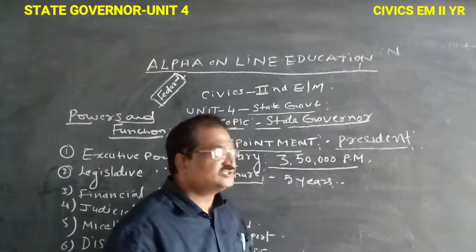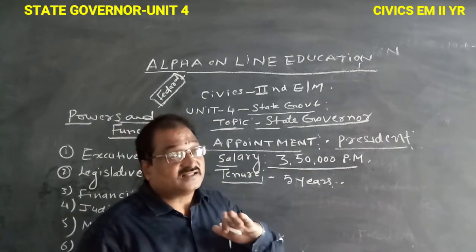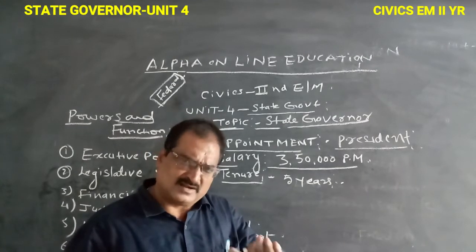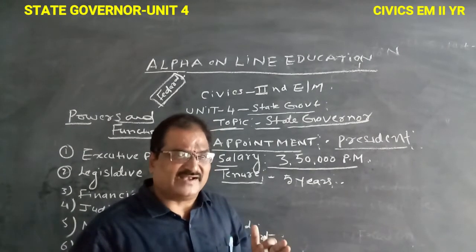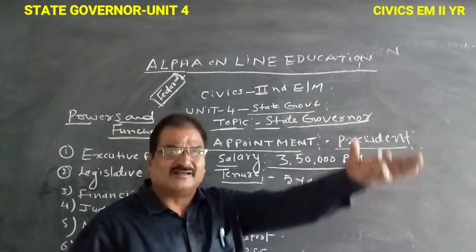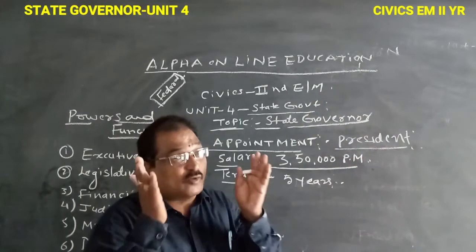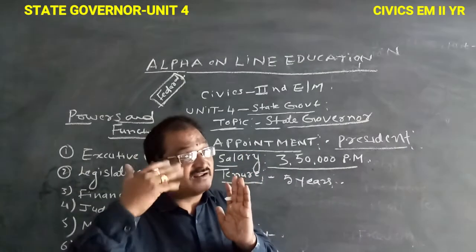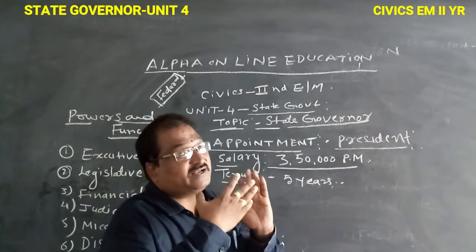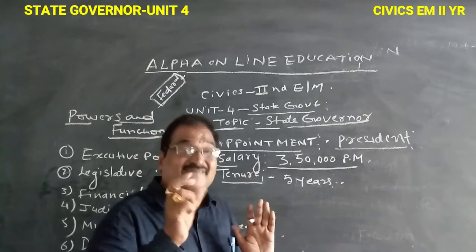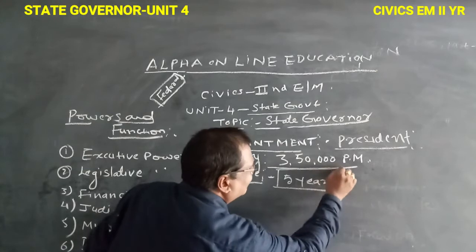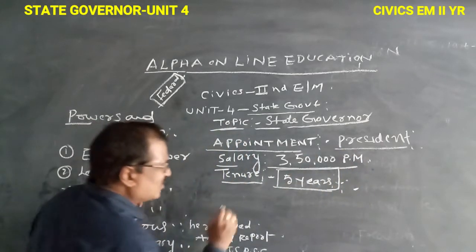Although the constitutional term is five years, the President can dismiss the Governor before completion of five years on the advice of the Prime Minister. For example, when there is a change in government, previously appointed governors may be dismissed.